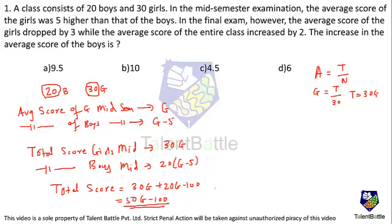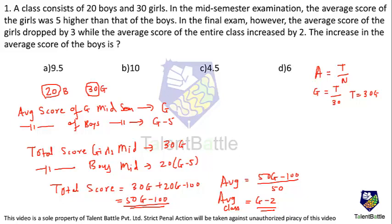The average of the entire class is total score divided by number of students, which is 50. So the average equals (50g minus 100) divided by 50, which gives g minus 2. So the average of the whole class in the mid-sem exam is g minus 2. This is what we've calculated for the mid-sem exam. Now let's check what happens in the final exam.